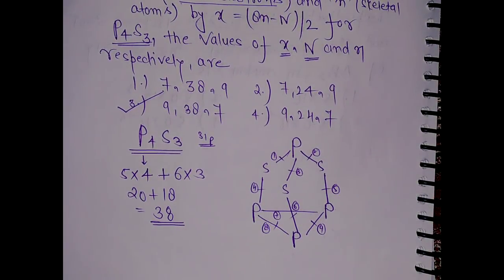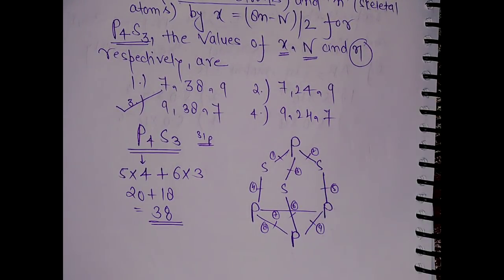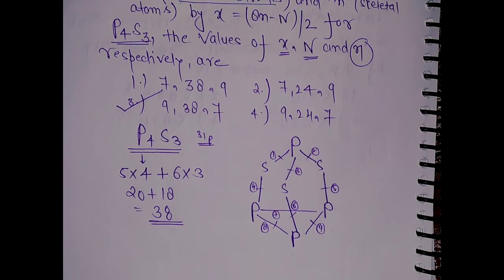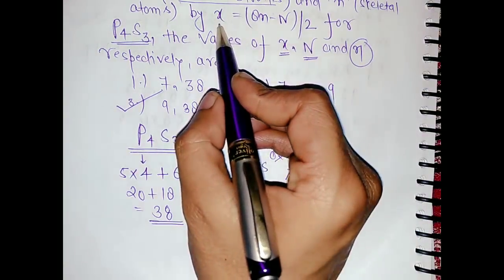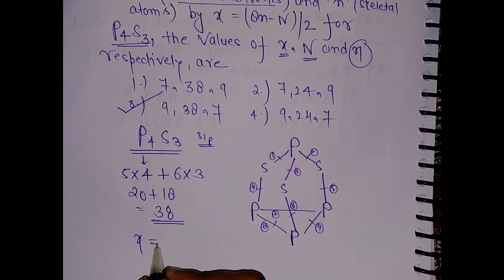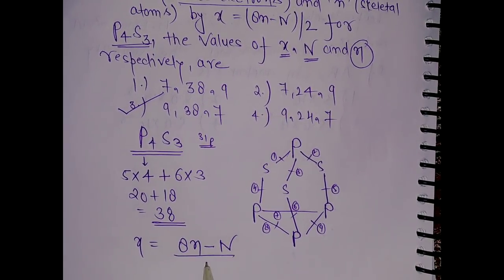Are you getting my point? The n value in the question has to be calculated, but without that we are getting our answer. Still, we can verify that by the given formula. The given formula is x equals to 8m minus n divided by 2.